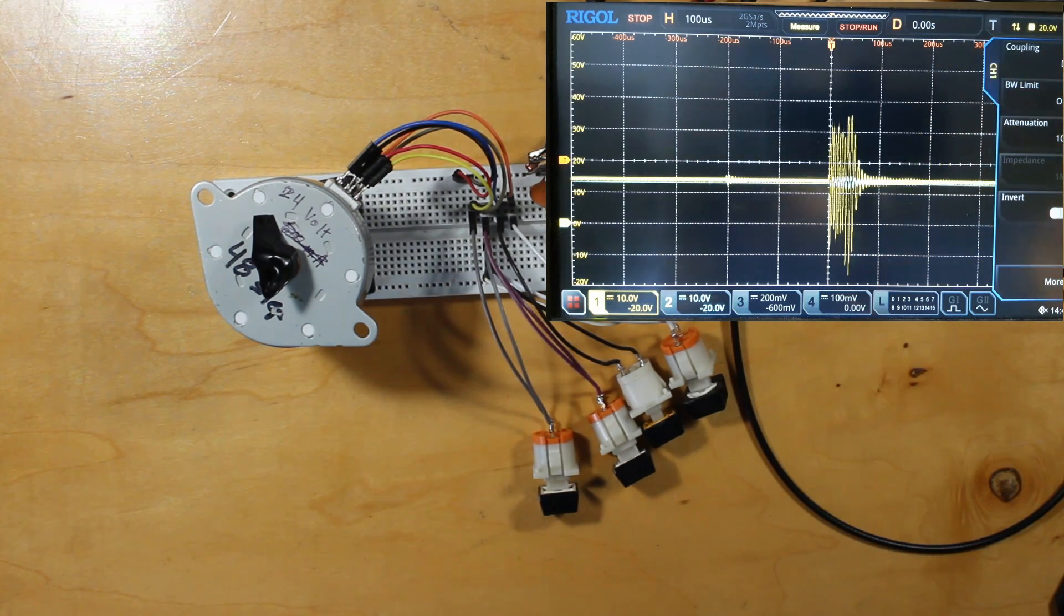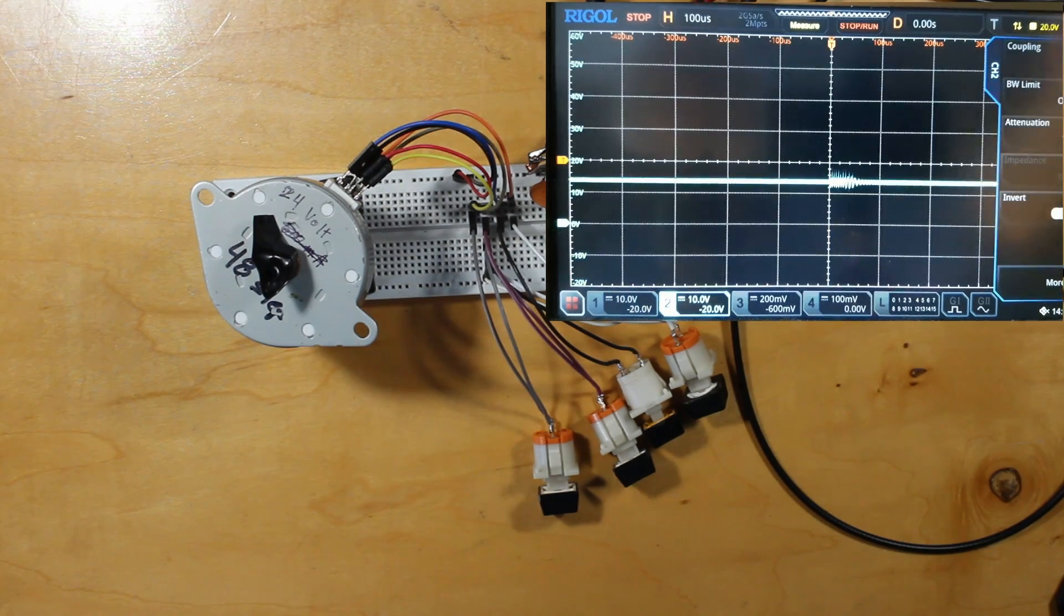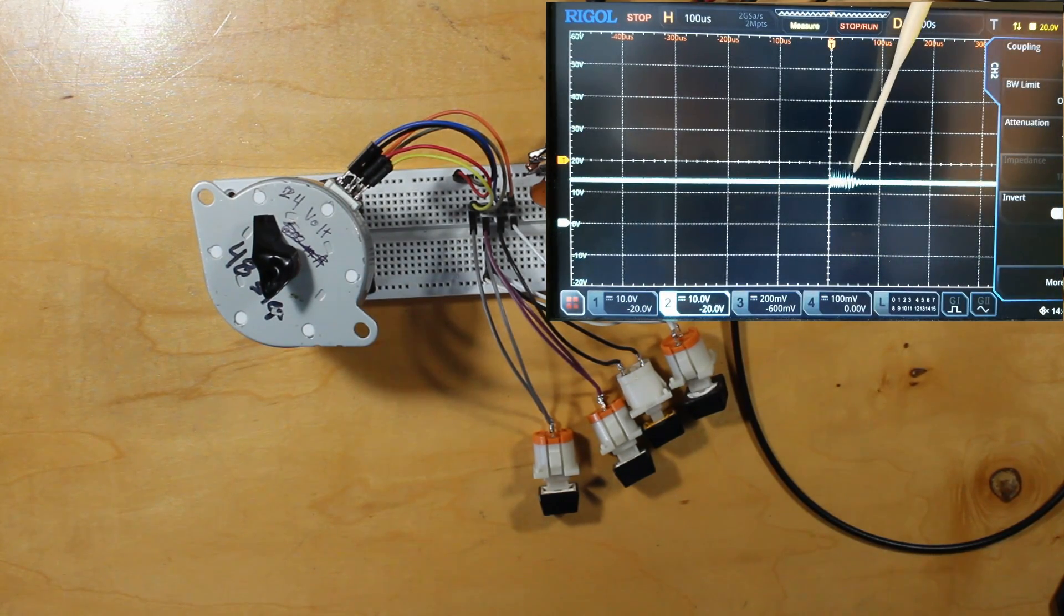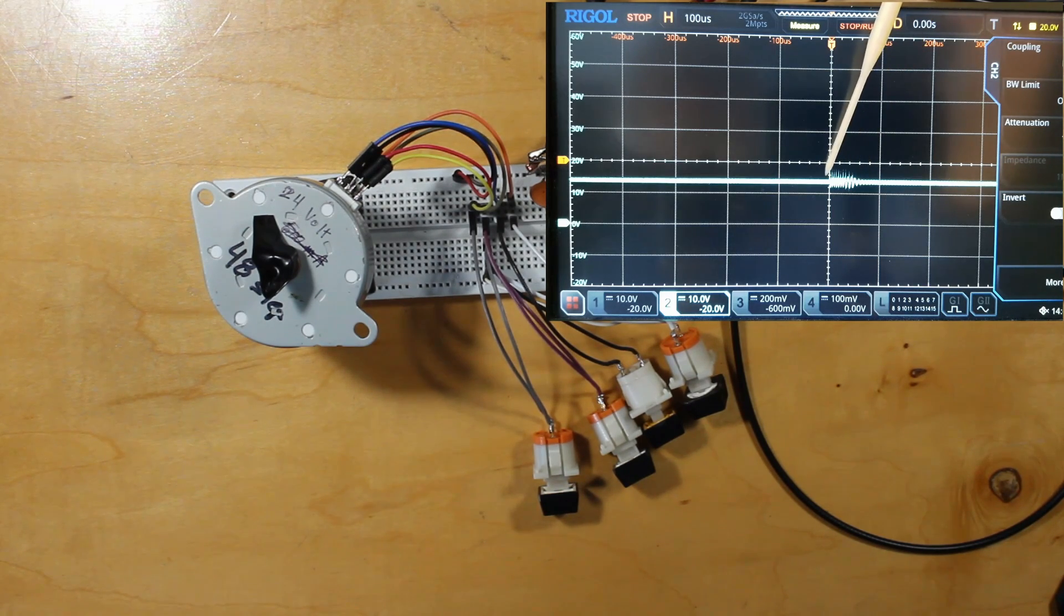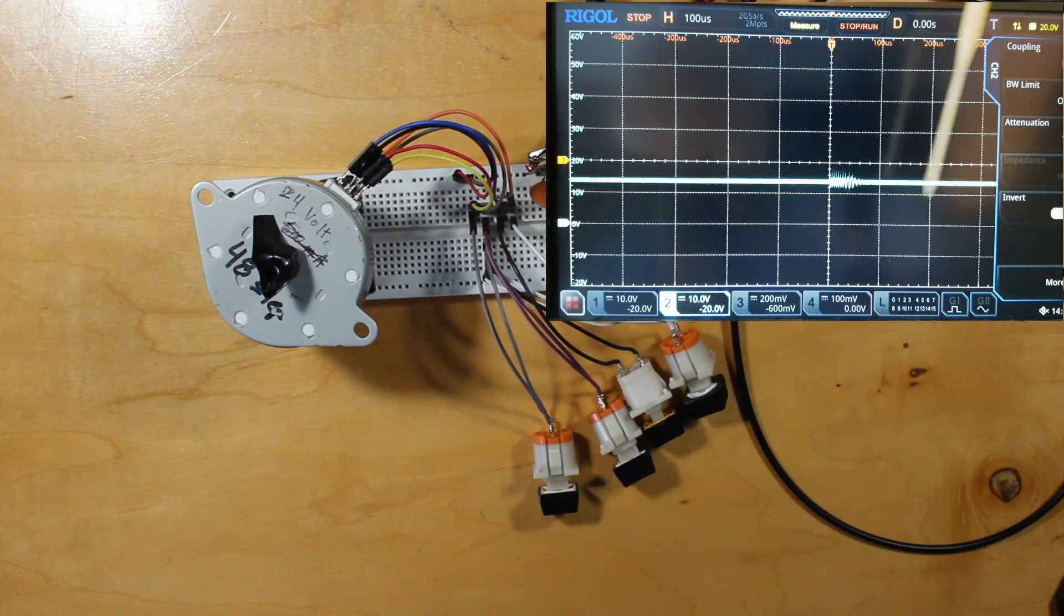You can see that it goes to say 35 volts or so plus positive and you'll also notice that some of the ringing goes down below zero here as well. Now if I take the yellow trace off of here and show us just the blue trace which is on the other side of that inductor, that toroid inductor.